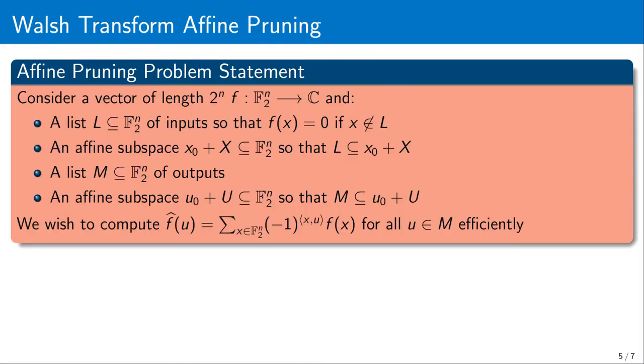It is for this reason that we introduce a new pruning technique for the fast Walsh Transform. We consider that all the non-zero inputs will lie in some known affine subspace x, and we also assume that we only wish to compute the outputs which lie on another affine subspace u.